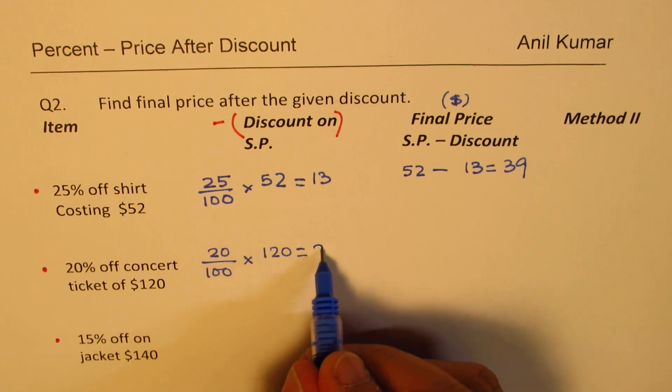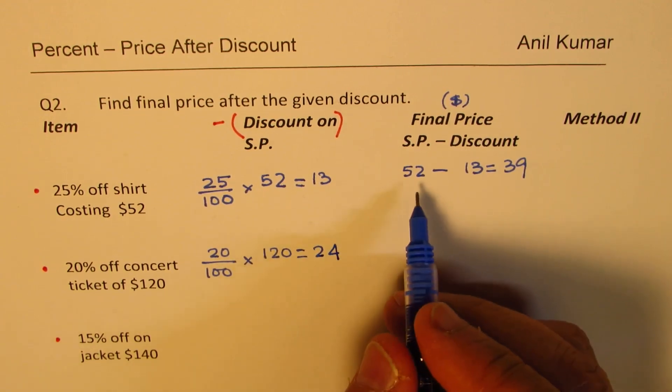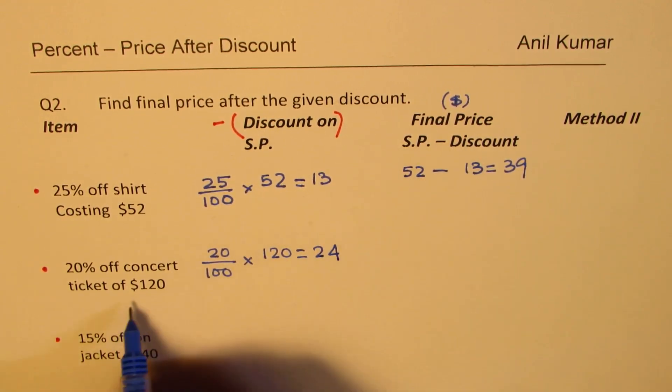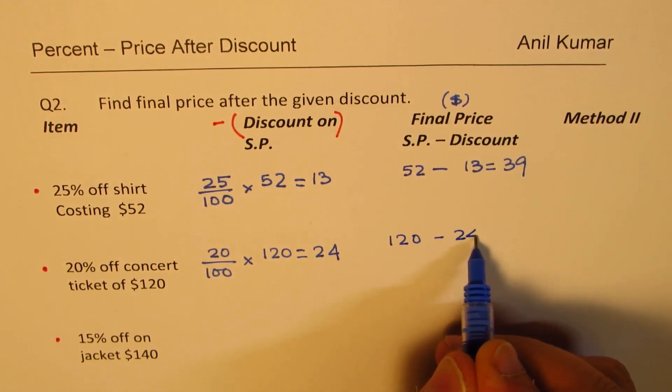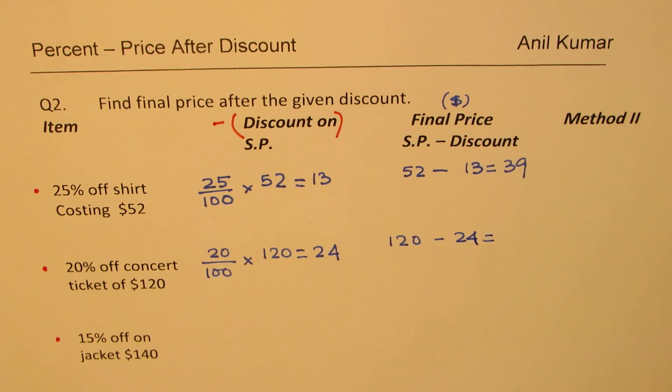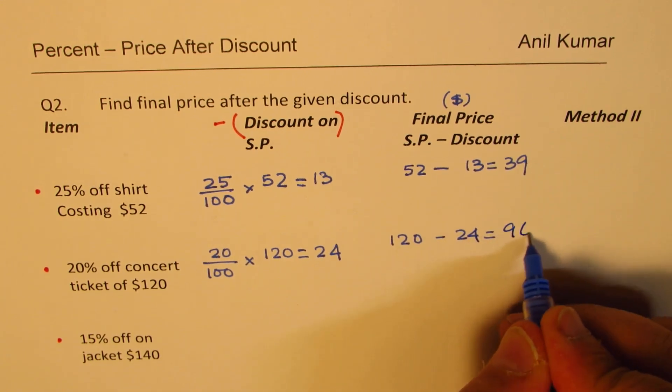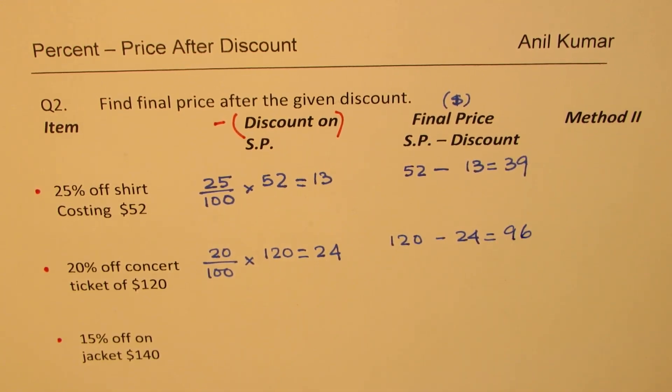And now here, final price should be how much? From $120, we have to take away 24. So, if you take away 20, you get 100. 4 more means 96. Is that correct?